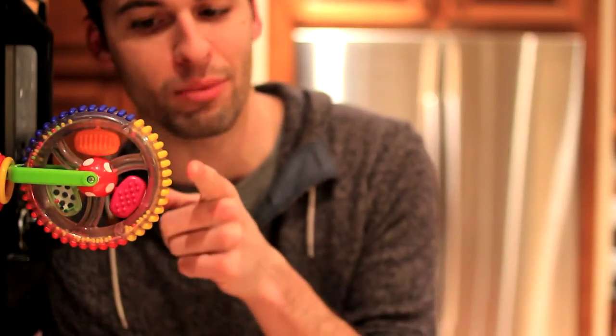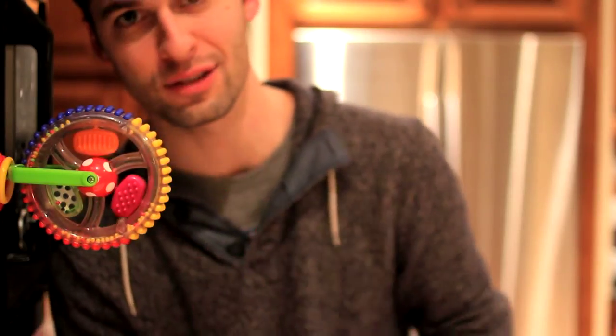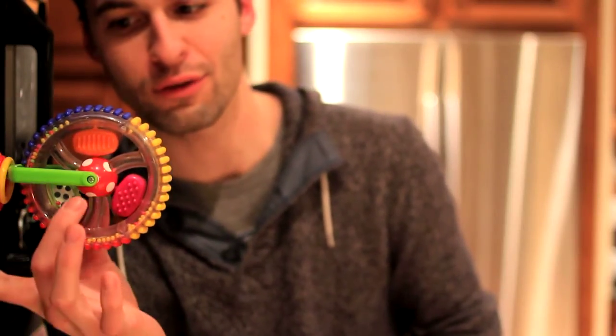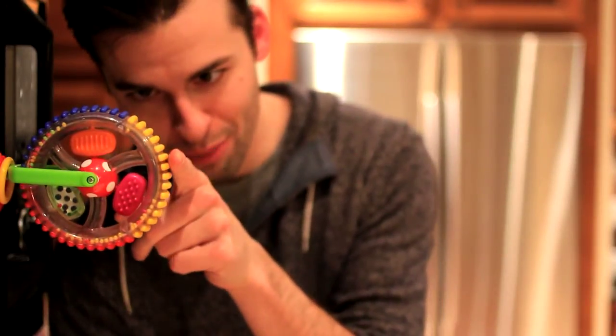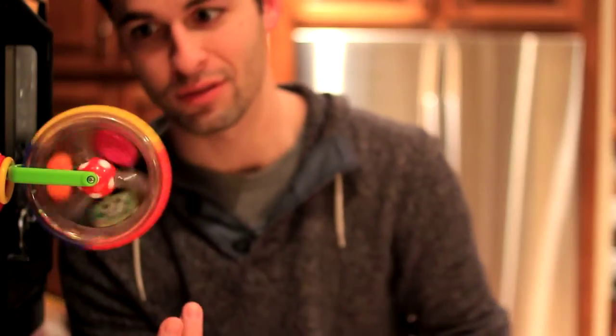So here I borrowed one of my son's toys, and I'm going to apply a force at a distance from this toy's axis of rotation. Now, axis of rotation is a point about which the rest of the mass moves. So whenever I apply a force down, the wheel spins.